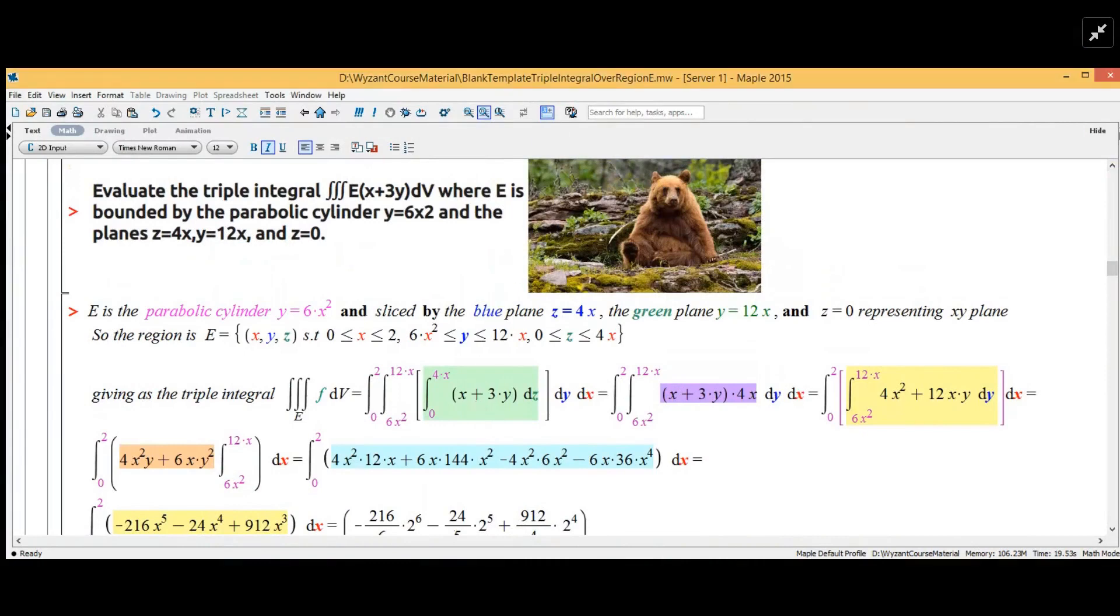So here's a problem. It's a parabolic cylinder y equals 6x² and it's going to be sliced by the blue plane z equals 4x and the green plane y equals 12x and z equals zero.